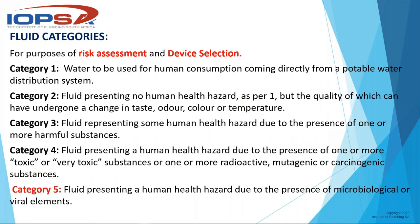Different fluids have been categorized into different categories. Category one is your normal potable water as received from the municipality, fit for human consumption directly from the system. Category two is fluid presenting no human health hazard but the quality of which may have undergone a change — important changes in taste, odor, color, or temperature. Many people have water softeners or water purifiers on the system, changing the taste. Every installation has a geyser, changing the temperature. So any water on our premises will be categorized as category two at best.